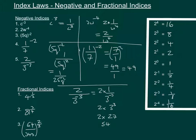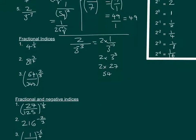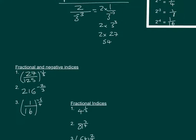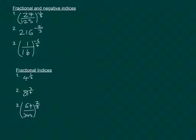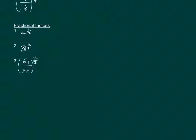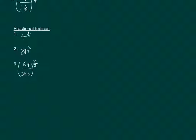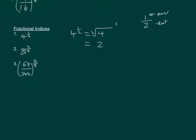Now let's look at fractional indices. For fractional indices we need to do something slightly different, in that we are dealing with roots. So if you had an index like 4 to the power of 1 half, that is just going to be the square root of 4 to the power of 1, which is 2. Essentially, with a fractional index, you've got the power on the top and the root on the bottom.